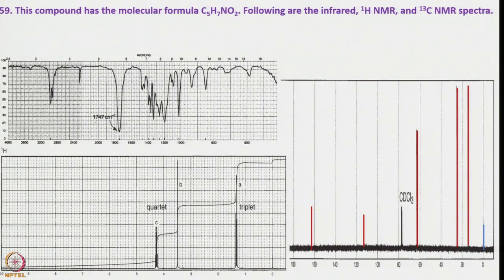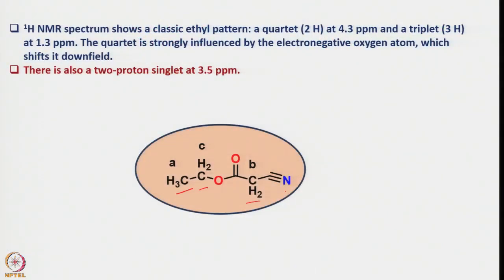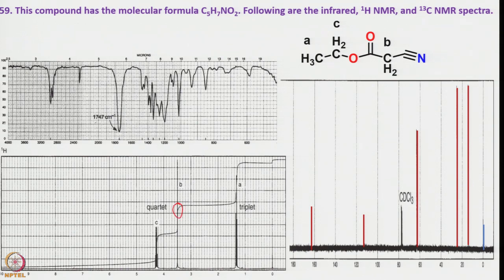The structure is: CH3CH2–O–CO–CH2–C≡N, that is ethyl cyanoacetate. The ethyl group gives a quartet (CH2) and triplet (CH3). The CH2 between the ester and nitrile appears as a singlet since it has no adjacent CH groups. The carbonyl and nitrile signals are also visible in the 13C NMR. This nicely illustrates how spectral data can be interpreted with knowledge of characteristic absorption positions.